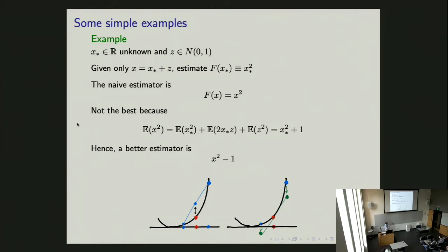In the first example, I have X-star, an unknown quantity on the real line, and Z is a Gaussian random variable. I don't know what X-star is — I only get to observe X, which is defined to be X-star plus Z, a noisy version. The goal is to estimate not X-star, but X-star squared. The naive estimator says: I take my X and plug it into the function f(X) = X², and report that as my best guess. Because I only have one single sample, I just plug it into f and report the answer.